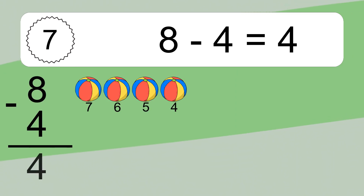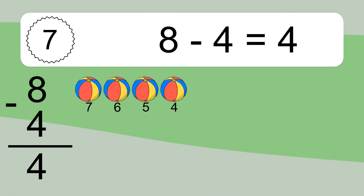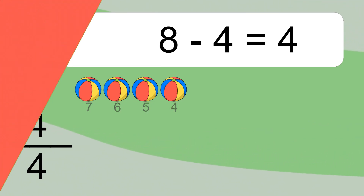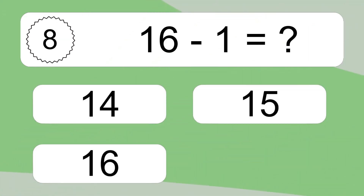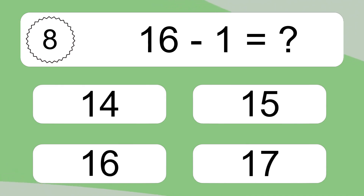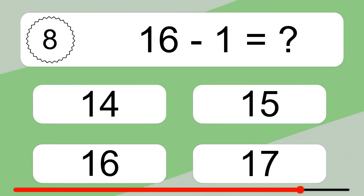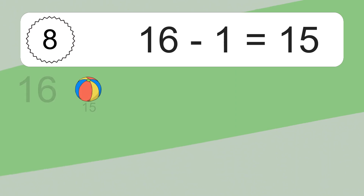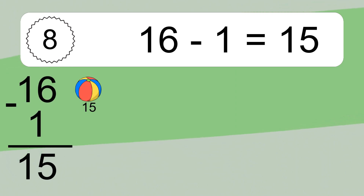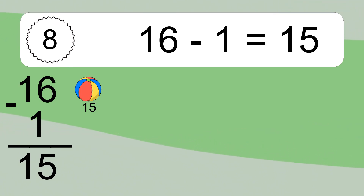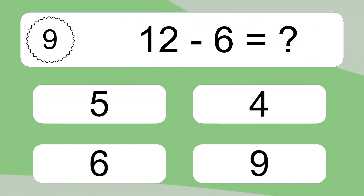8 minus 4 equals what? 8 minus 4 equals 4. Let's count it: 7, 6, 5, 4. 16 minus 1 equals what? 16 minus 1 equals 15. Let's count it: 15.